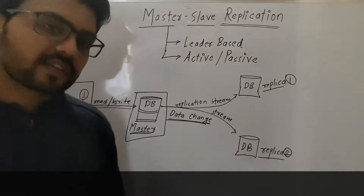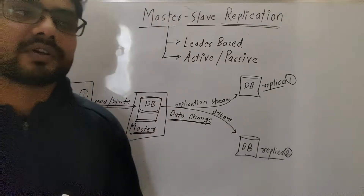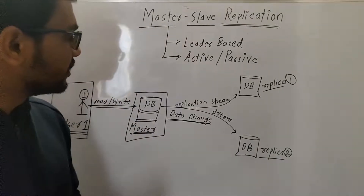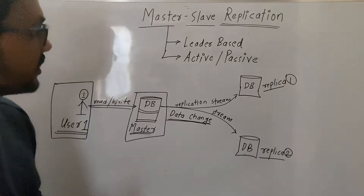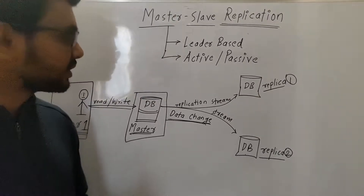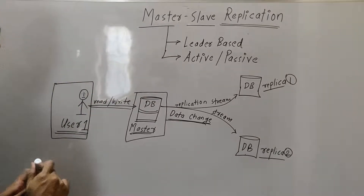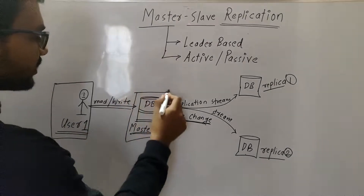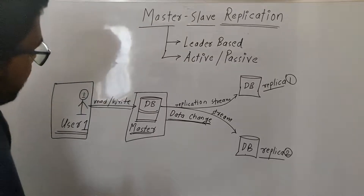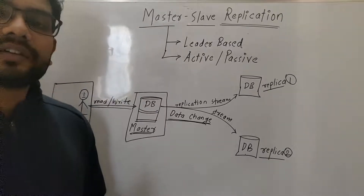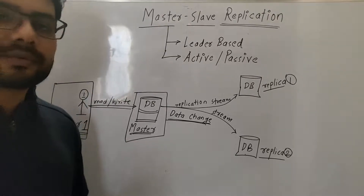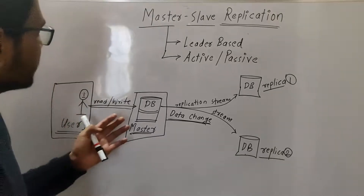Now, one of the reasons why we need replication is scalability. In this initial setup, we are not fully utilizing replication for increasing scalability, because all the read and write requests are going to the master database. If the load increases — if the number of queries per second increases — then only the master server is responsible for serving all the read and write requests.